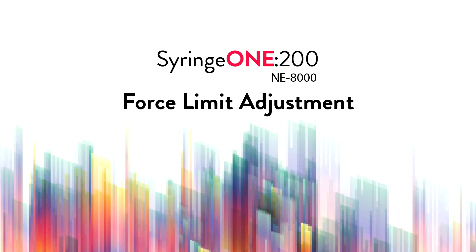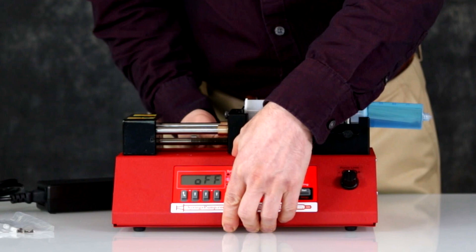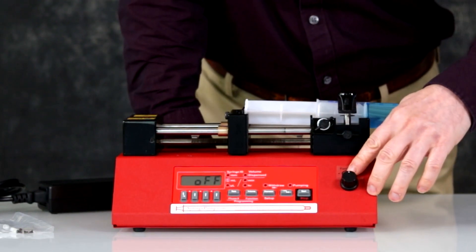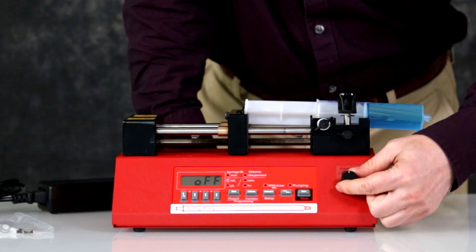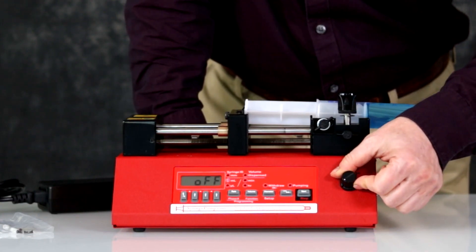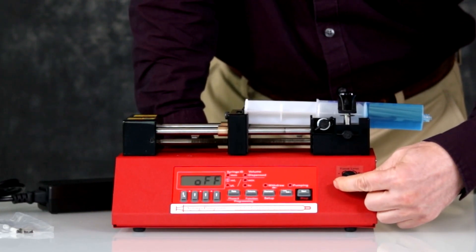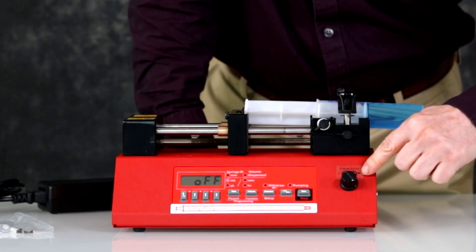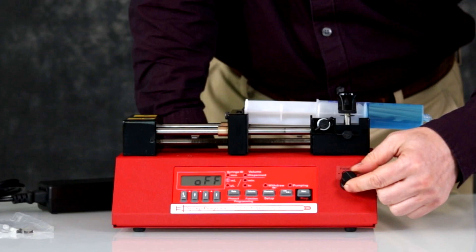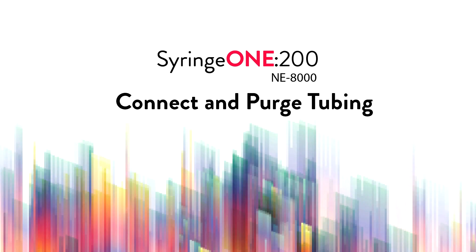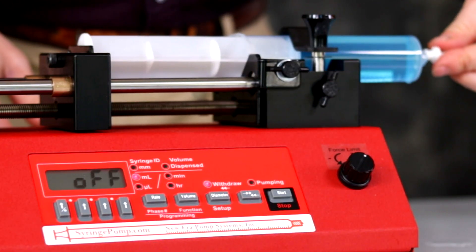NE-8000 force limit adjustment. At the front is a force limit adjustment. Turn the knob to change the force. Turn towards plus for higher force. To limit force, turn towards minus. NE-8000 connect and purge tubing. Connect your tubing to the syringe.